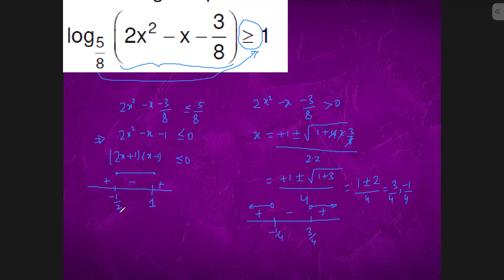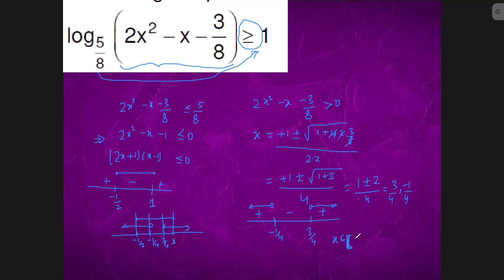Combining both conditions on the same number line — with -1/2, -1/4, 3/4, and 1 marked — the common region satisfying both inequalities gives the final answer: x ∈ (-1/2, -1/4) ∪ (3/4, 1).